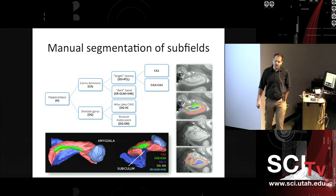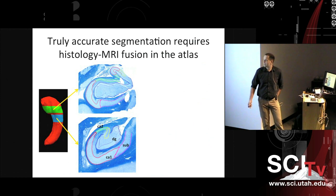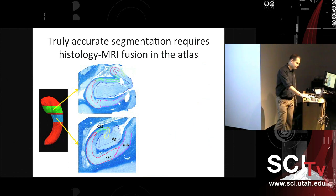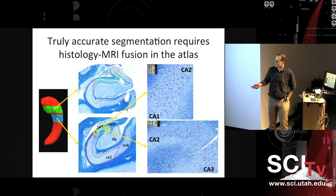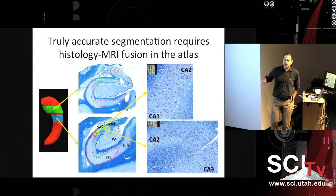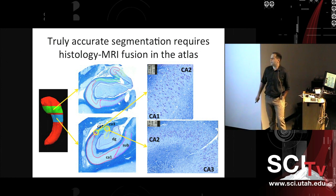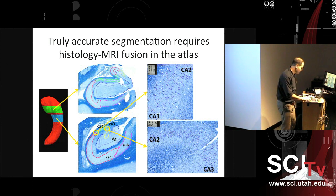When we have this high-quality data, we can certainly do a better job of segmentation than we can in vivo. But really accurate segmentation requires us to go into the histology space. Here are examples where we're actually drawing these boundaries at the cell scale — looking at nuclei becoming larger, which is a probable location for the CA1/CA2 boundary, or the appearance of some fibers crossing through the hippocampus layer, which is the CA2/CA3 boundary.